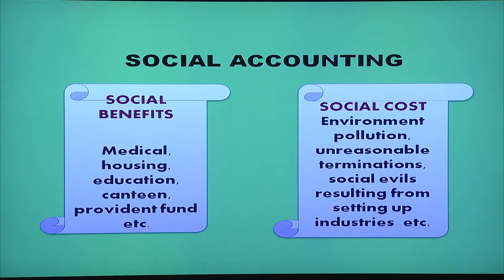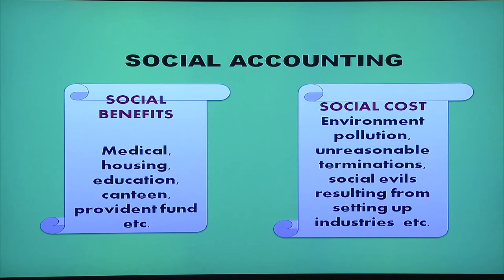Social benefits include medical benefits, housing benefits given to employees, educational benefits, canteen facility, provident fund, etc. Social costs include environmental pollution, unreasonable termination, and social evils resulting from setting up industries.